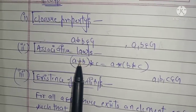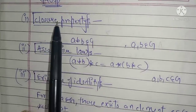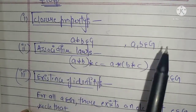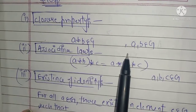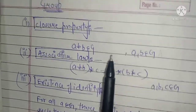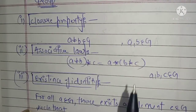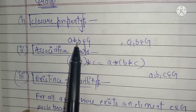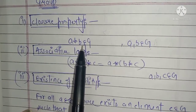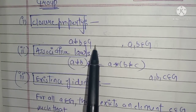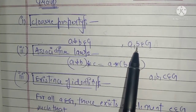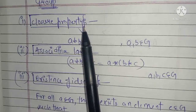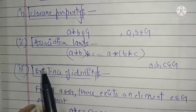I hope that you have seen the first lecture and will remember. Closure property means: if you have two elements inside the set and you apply a binary operation — like addition, multiplication, subtraction, or anything — the result must also be in the set. That is the closure property. The second property is the associative law.